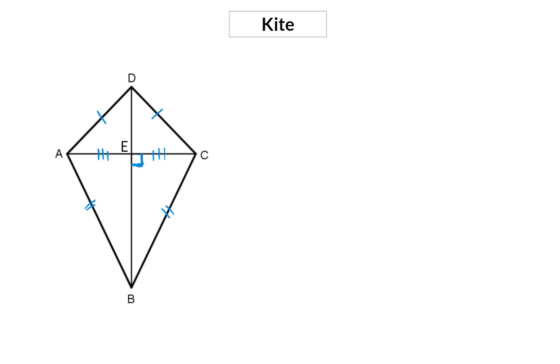To determine the formula for the area of a kite, I'm going to divide this kite into two triangles. Now we can calculate the area of each triangle and add that up.